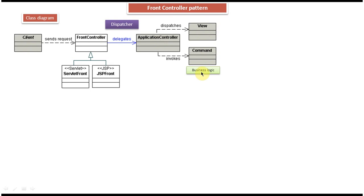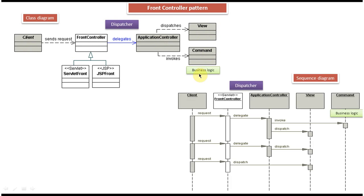Next we will see the sequence diagram of front controller design pattern. We can see client, front controller, application controller, view, and command. The client sends a request to the front controller. The front controller performs common operations like authentication, authorization, or logging, and then it delegates the request to the application controller. For delegating the request it may use the dispatcher.